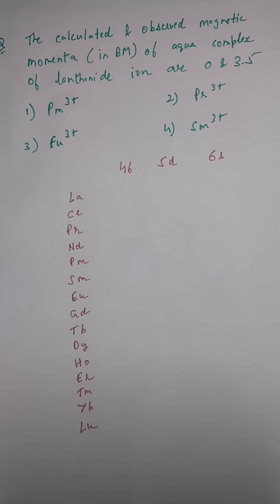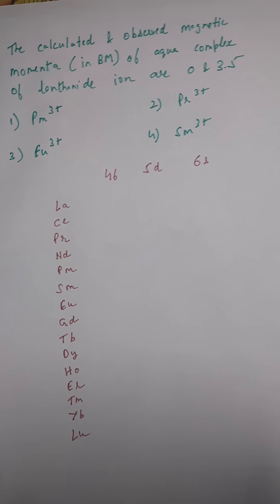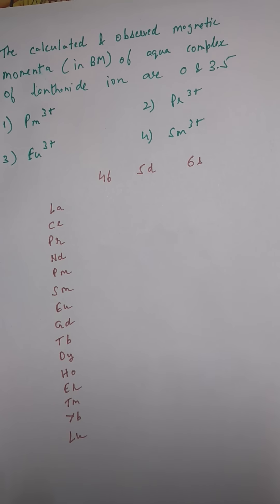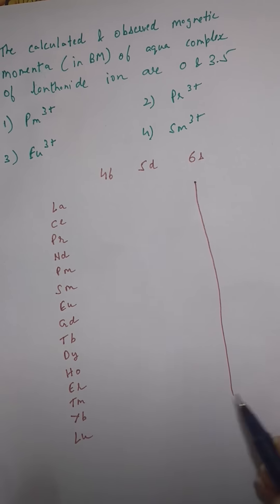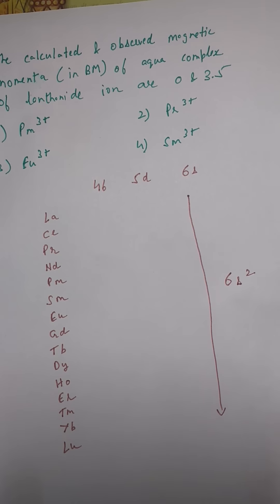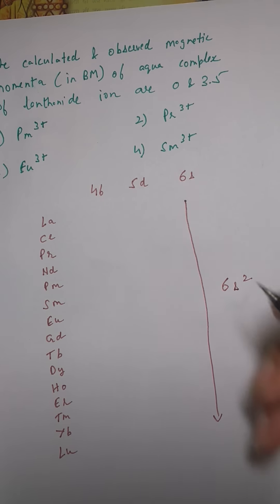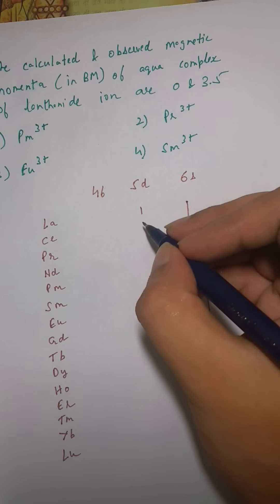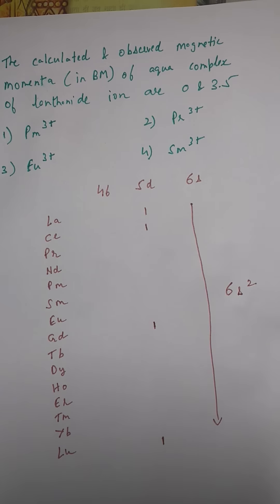First of all, the most basic thing is that you should know the electronic configuration of each and every element in the lanthanide series. There are certain anomalies as well, so you need to know the configurations. All lanthanides have a 6s² electronic configuration. Now in the 5d subshell, there are only four elements that have electrons: lanthanum, cerium, gadolinium, and lutetium.